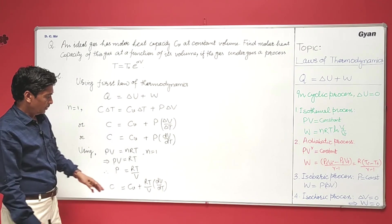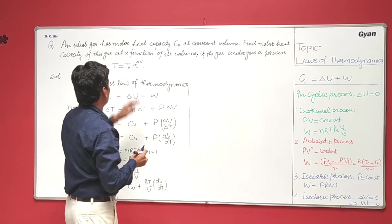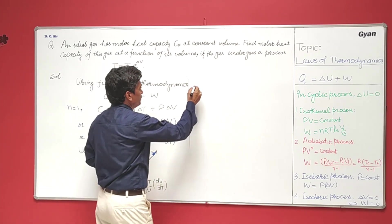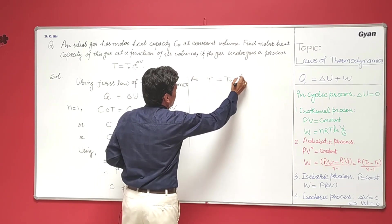Now we have to find the value of dV over dT from the equation you have given: T equals T₀ e to the power alpha V.